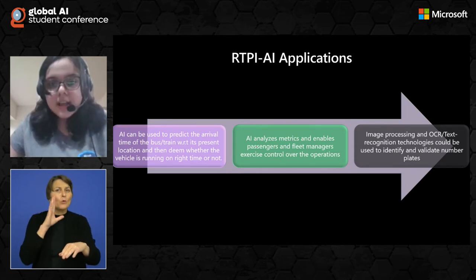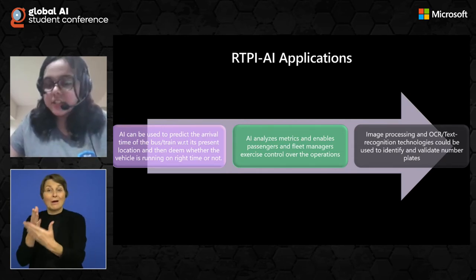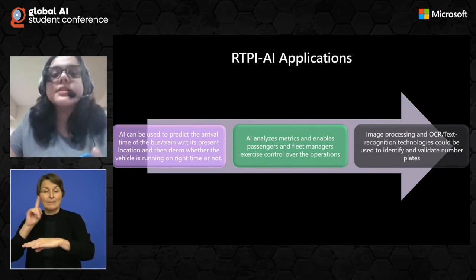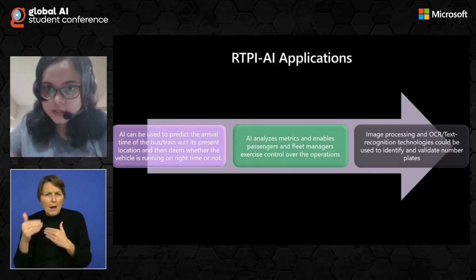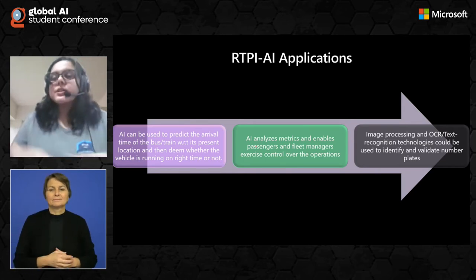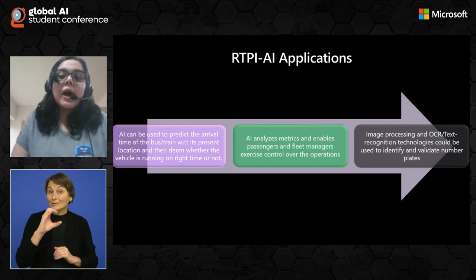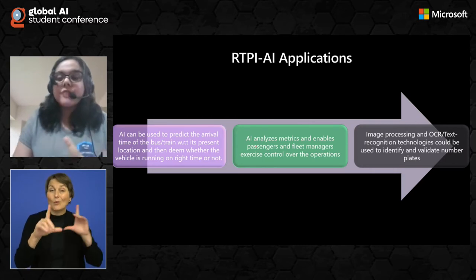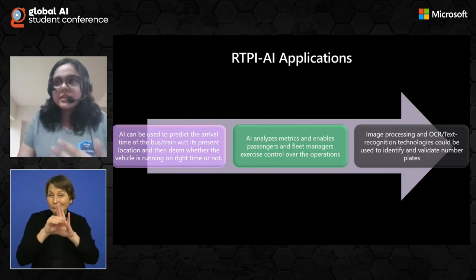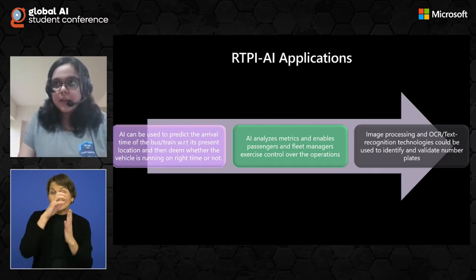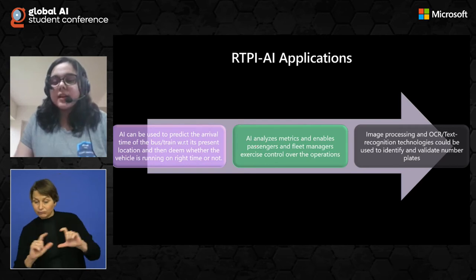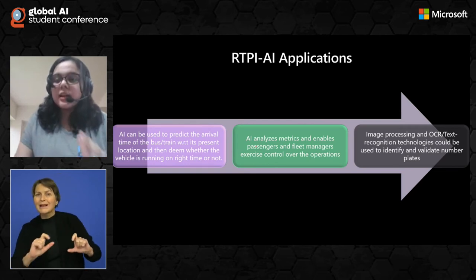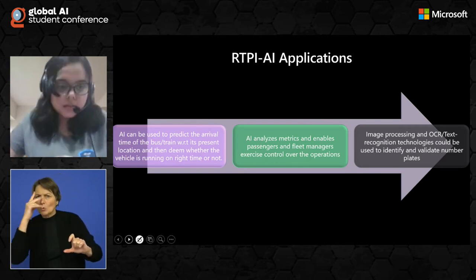AI analyzes metrics and enables passengers as well as fleet managers to exercise control over the operations. Image processing, OCR, and text recognition technologies could be used to identify and validate the various number plates of vehicles so as to prove that the vehicles running are legal and qualified.